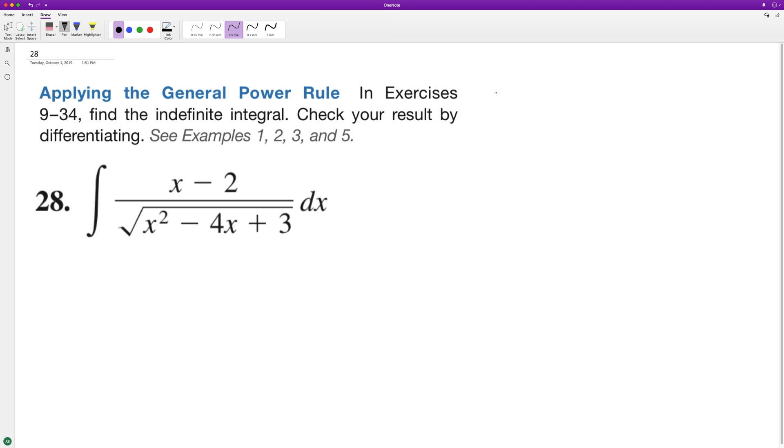We'll use u substitution. We'll set u equal to x squared minus 4x plus 3, and du is going to be equal to 2x minus 4.